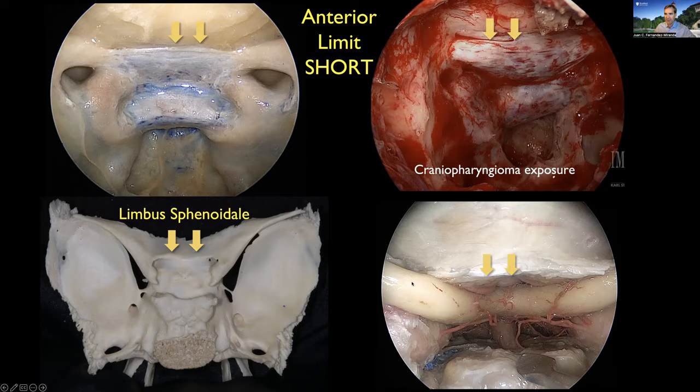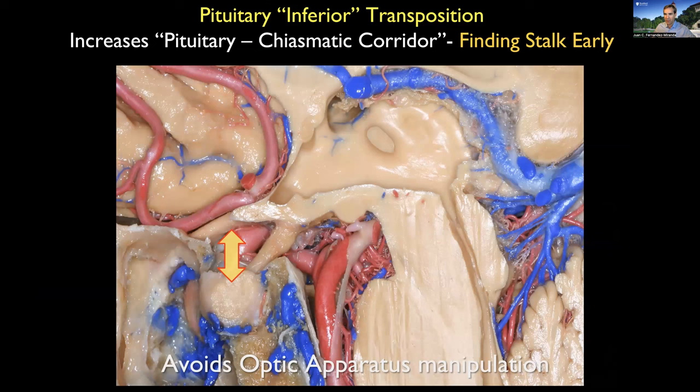Our surgical corridor for craniopharyngiomas working endonasally is always between the optic apparatus and the pituitary gland. That's why it's very important to drill the sella well so I can gently displace the pituitary gland inferiorly. This allows me to find the pituitary stalk early in the case so I can try to preserve it and follow the tumor attachment or origin, and also gives me increased exposure to the hypothalamic region. So we don't manipulate the optic nerve — we manipulate the pituitary gland.